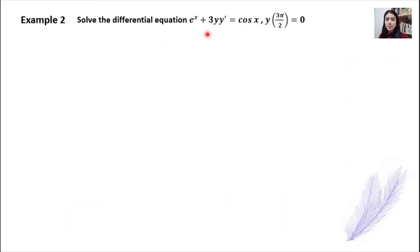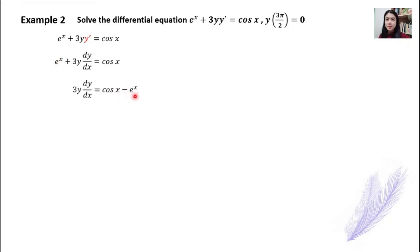Example 2 is an initial value problem with initial condition y(3π/2) = 0. Looking at the differential equation, change y prime into dy/dx. This is not in the typical form of a separable equation, so we modify it. Bring the e^x to the right-hand side to get cos x minus e^x. Now the right-hand side contains only variable x, so move dx to the right-hand side. The left-hand side has only variable y with dy, and the right-hand side has only variable x with dx.